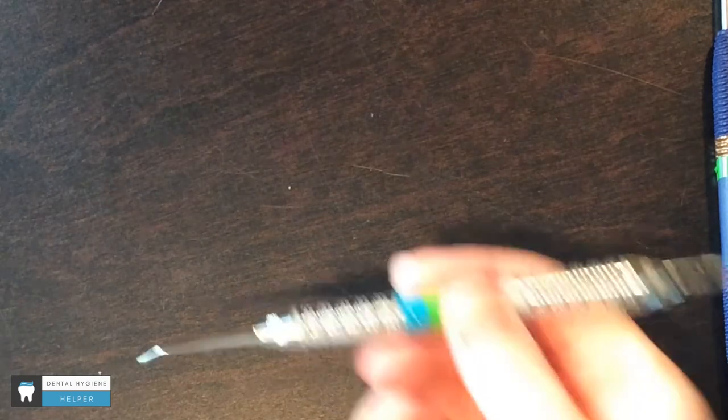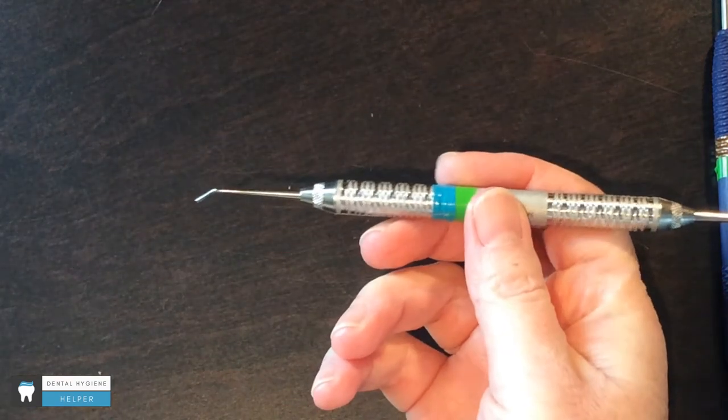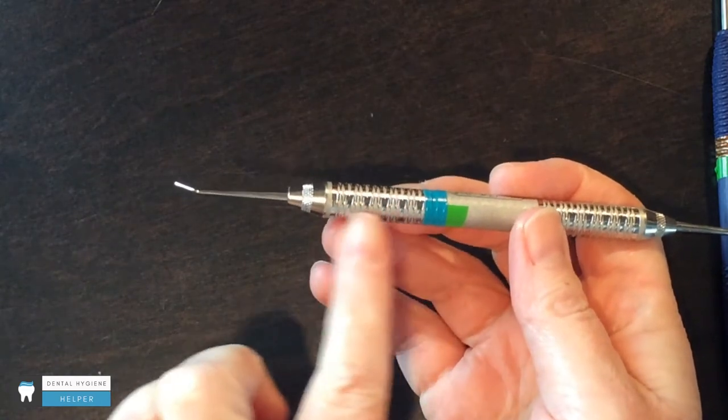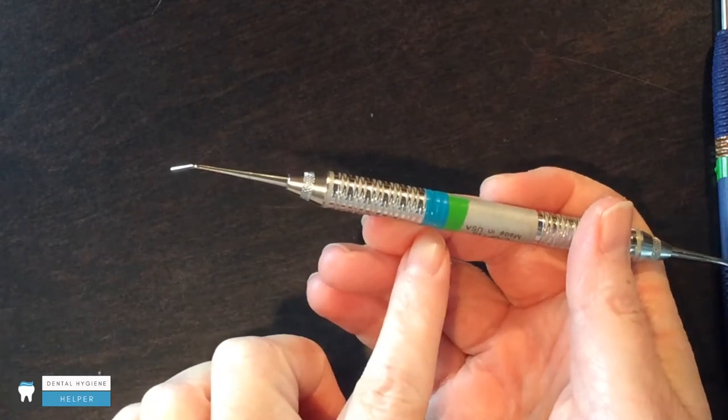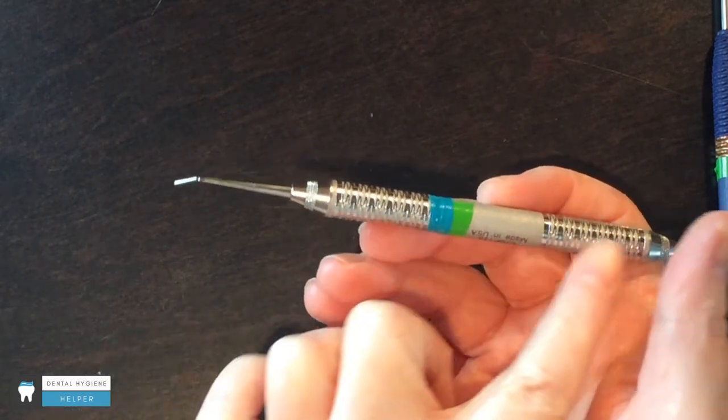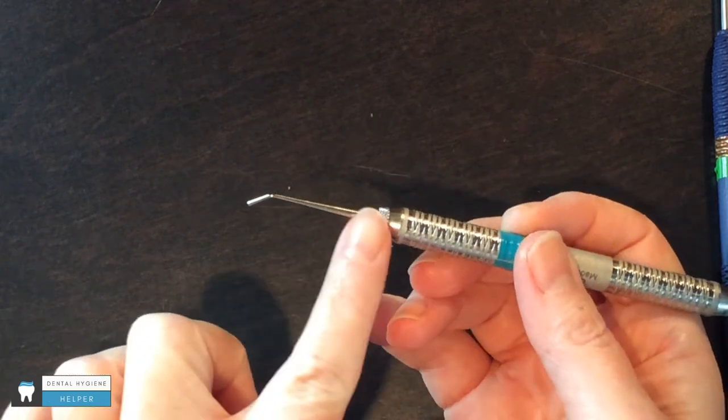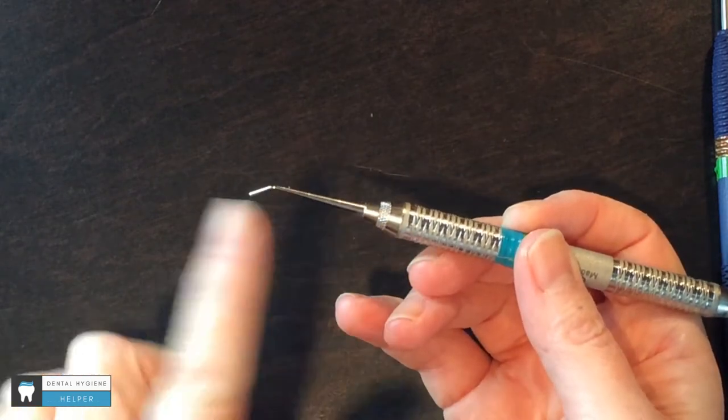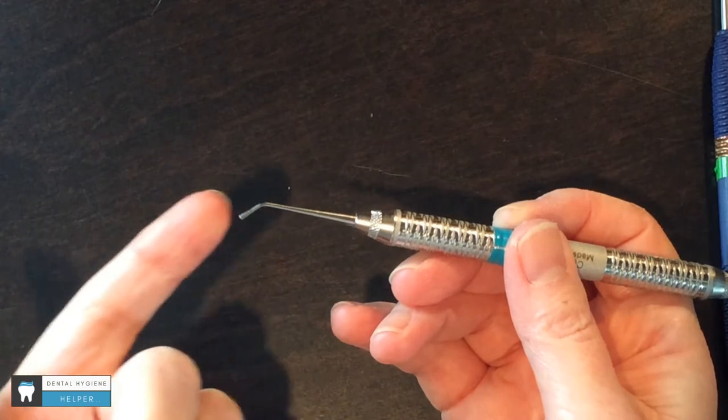Let's look at our instrument design. I have this instrument here with a textured handle that's a number six size. We've got this handle, then the shank of the instrument, and the working end here.